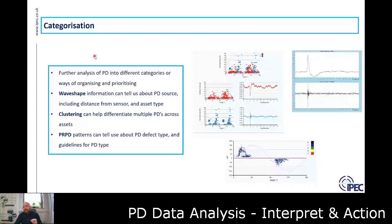There are a few different ways to categorize PD, and the list is actually a bit longer than what's on this slide — these are the key ones. The first is wave shape. We have the ability to look at the individual wave shape, and how the wave shape pattern of PD occurs gives us an indication of where the PD may be relative to the sensor and relative to the asset.